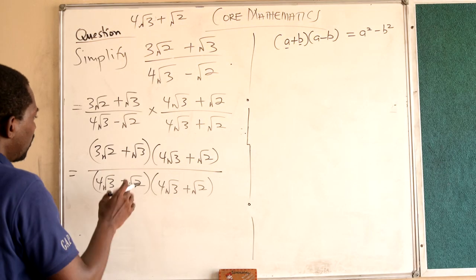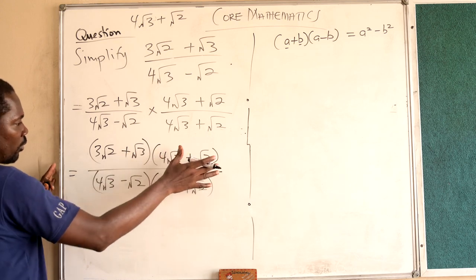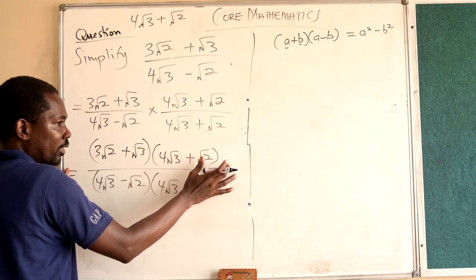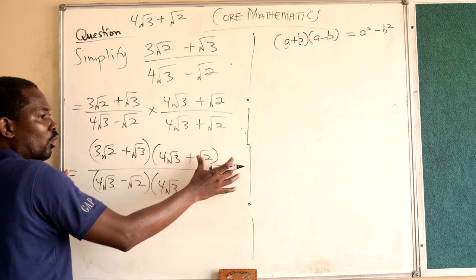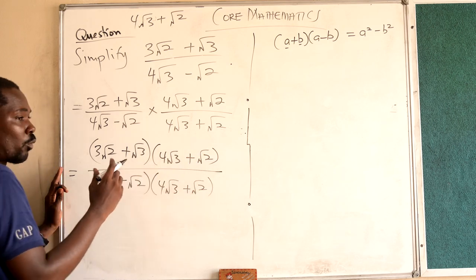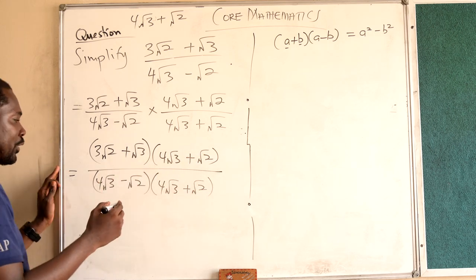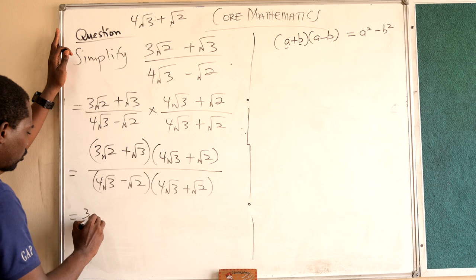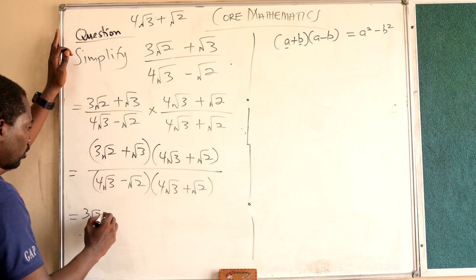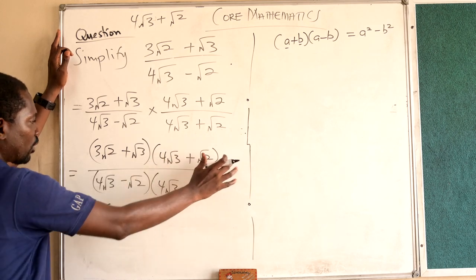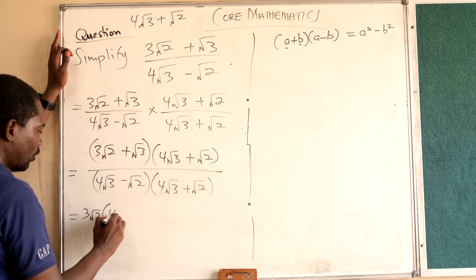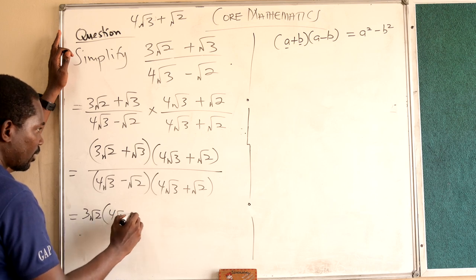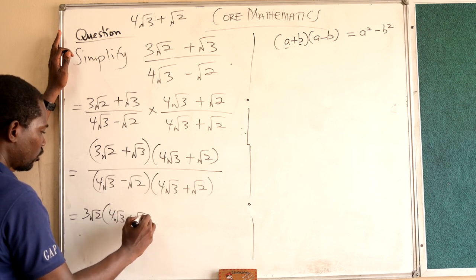When you do the multiplication in the numerator, each term multiplies the whole bracket. So 3√2 multiplies (4√3 + √2), and similarly √3 multiplies (4√3 + √2). That is expansion.